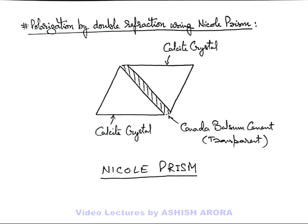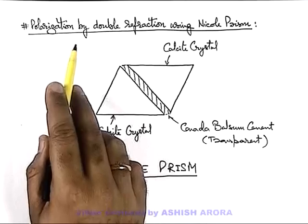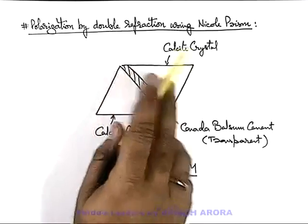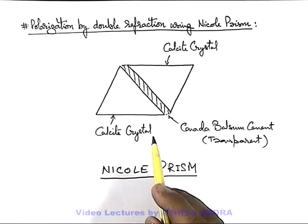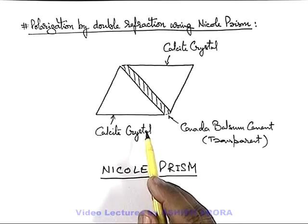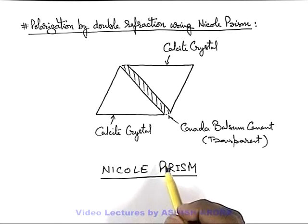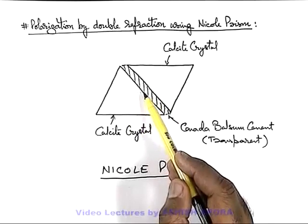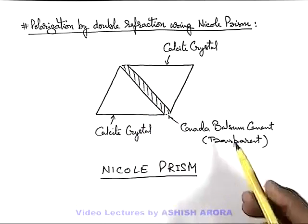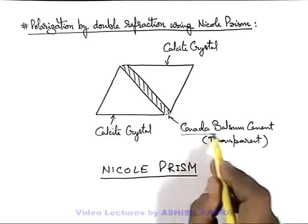Let us now study the concept of polarization by double refraction using the Nicol prism. Here you can see this is the device we call the Nicol prism. It is made up by cementing two calcite crystals by a transparent cement called Canada balsam.